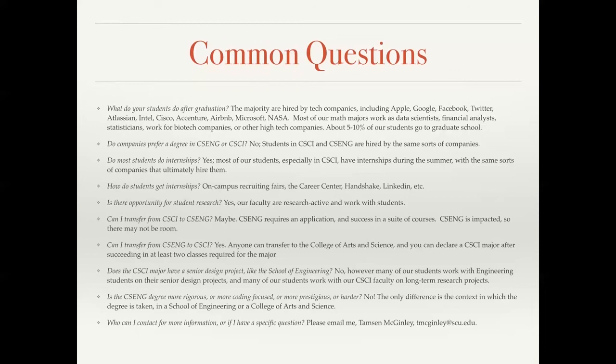A very common question is: is the computer science and engineering degree more rigorous, more code-focused, more prestigious, or harder than the degree in the College of Arts and Science? And this is absolutely not true. The only difference between the two degrees is really the context in which the degree is taken. You saw earlier that the list of classes required for either degree within the computer science footprint are nearly identical. So the difference is: are you working within an engineering school, which has a lot of classes outside of computer science that are required? Or are you working in the College of Arts and Science, where you have more flexibility to broaden your degree, double major, or create something more tailored to your interests? Please feel free to email me — my email is given here — and I'm happy to answer any questions that you have.